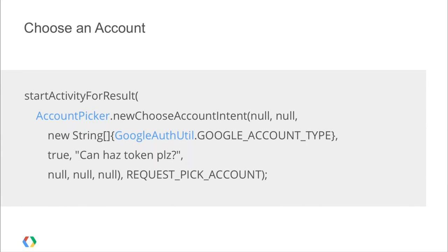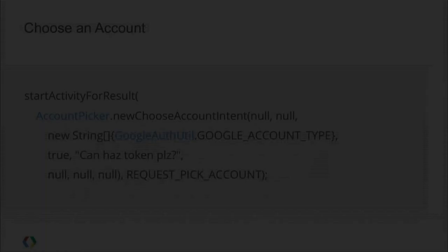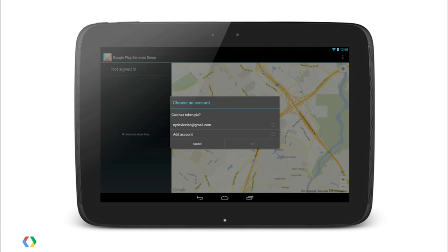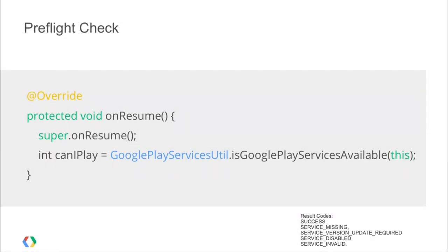Previously the flow for getting authorization tokens for Google APIs involved web views and was a bit of a pain. Now with Google Play Services you can get hold of these tokens much more easily. It kicks off with choosing an account — one line of code using the account picker filtered on Google accounts — which shows the user a dialog to choose one of their Gmail accounts. Then before using Google Play Services, check that it's on the device, the right version, and not disabled: that's also just one line of code — GooglePlayServicesUtil.isGooglePlayServicesAvailable(). If it returns error codes, call getErrorDialog() to show a localized error dialog.